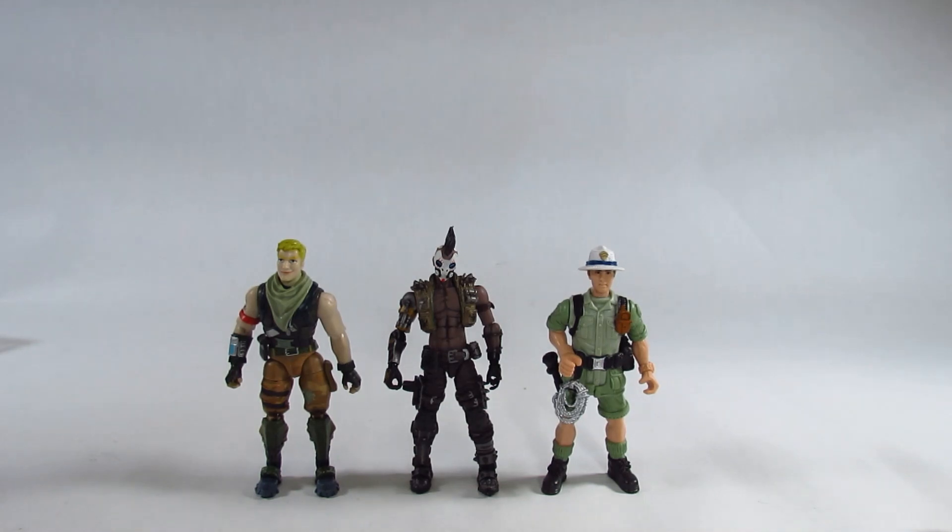Here is Jack next to a pair of 4 inch action figures. On the right is an adventurer from an Animal Planet set I reviewed a while ago. On the left is the Fortnite Jonesy action figure by Jazwares. And it looks like Jonesy and Jack fit in together pretty well, looks like they could be in the same universe. So I'm happy to be able to mix and match characters that fit in together.